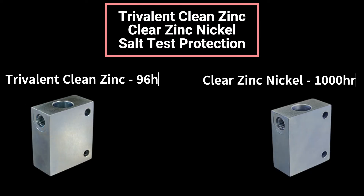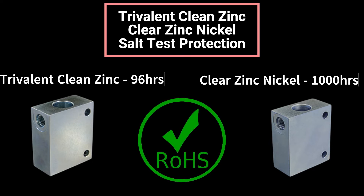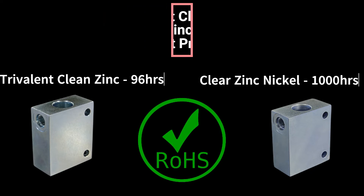Trivalent clear zinc with top sealer is rated for 96 hours of protection per salt fog test, whereas clear zinc nickel with top sealer — with a composition of 10% to 20% nickel with clear trivalent chromate treatment — is rated for 1,000 hours of protection. Both trivalent clear zinc and clear zinc nickel are compatible with the Restriction of Hazardous Substances directive.